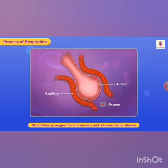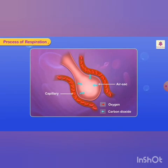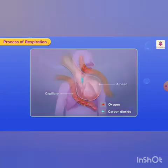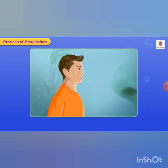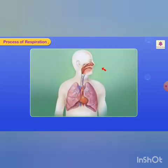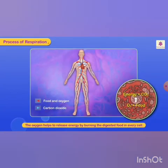As you breathe in, the air containing oxygen reaches the air sacs in the lungs. This carbon dioxide leaves your body as you breathe out. This process goes on continuously and it is called breathing. The oxygen helps to release energy by burning the digested food in every cell.